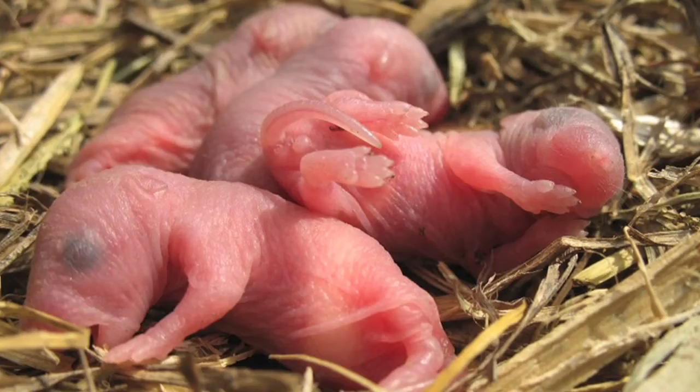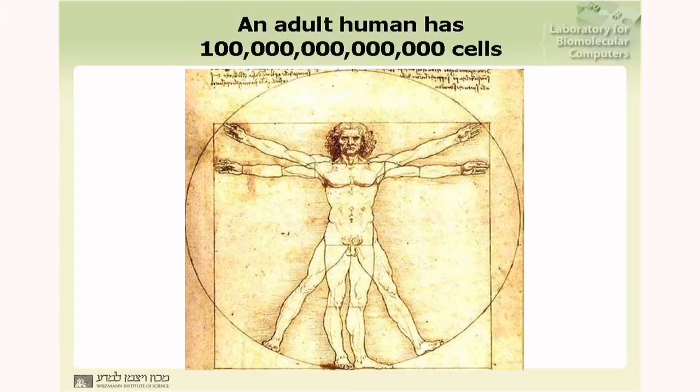Now, this is a complex problem — it won a Nobel Prize — but it's still tiny compared to the problem of understanding us. Even a newborn mouse has a billion cells, so it's much more complicated to understand how a newborn mouse develops from a single cell. A human adult has a hundred trillion cells. That means the cell lineage tree of each and every one of us has a hundred trillion leaves and about a hundred trillion branches.